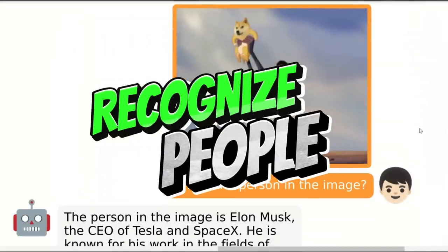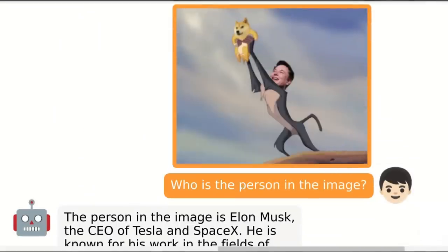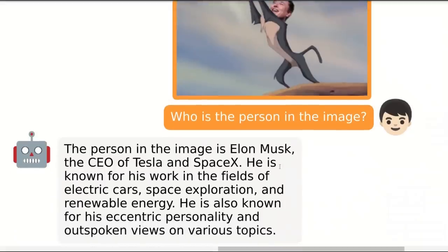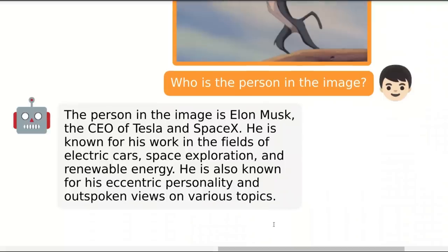It can also recognize people. For example, we ask 'Who is the person in the image?' and it responds: 'The person in the image is Elon Musk, the CEO of Tesla and SpaceX.' I guess it's not fully updated because it should say Twitter as well. He is known for his work in the fields of electric cars, space exploration, and renewable energy. He is also known for his eccentric personality and outspoken views on various topics.